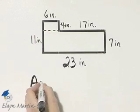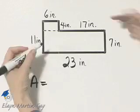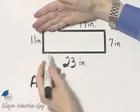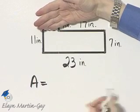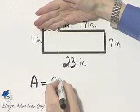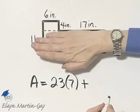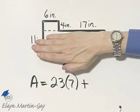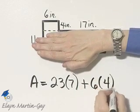So area is going to be this area plus this area. Let's find this area. This area is simply a rectangle, length 23 with 7, so 23 times 7. Then I'll add to it the area of the smaller rectangle on top, which is 6 times 4.